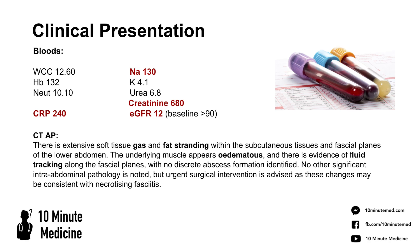The bloods come back: white cells are raised at 12.6, haemoglobin is stable, neutrophil count is also up. The key findings are a significantly raised CRP at 240, sodium trending down to 130 — the lower end of normal — and creatinine has shot up to 680 with eGFR dropping from a normal baseline of 90 all the way down to 12. She has no known renal conditions.